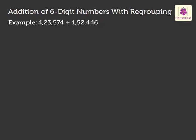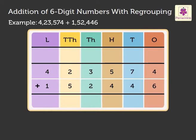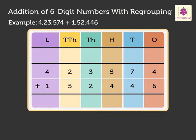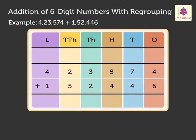Write the numbers in the place value chart. Now, add the numbers in each column, one by one, starting from the ones column.